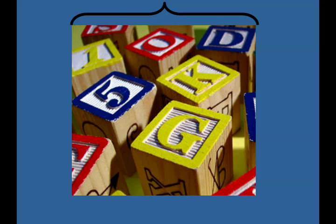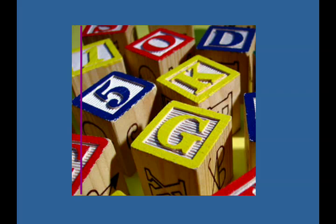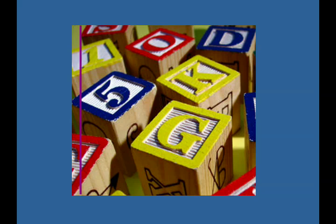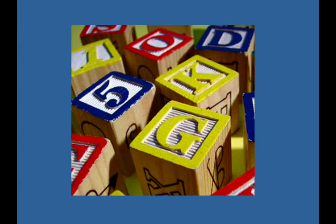For example, assume that we need to change the width of an image. The simplest way to do this is to remove columns of pixels from the image. The best column to remove would be the least noticeable or least important column. We can search for this column by defining an importance or energy function on the image. In this example, we use the gradient magnitude of the image. Next, we look for the column which contains the least energy and remove it.